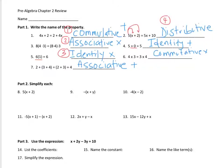Part two — simplify each. For number eight, I'm going to use the distributive property. So it's 5x plus 10, because 5 times 2 is 10. I'm not going to add these, because these are not like terms.